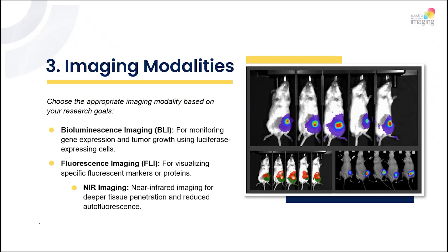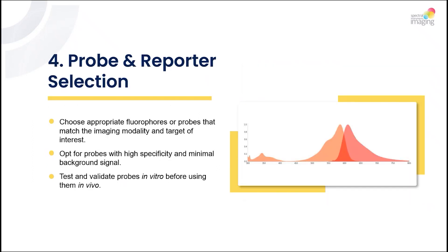Number three: imaging modalities. Choose the appropriate imaging modality based on your research goals. Bioluminescence imaging is used for monitoring gene expression and tumor growth using luciferase-expressing cells. Fluorescence imaging is used for visualizing specific fluorescent markers and proteins. Near-infrared imaging provides deeper tissue penetration and reduced autofluorescence.